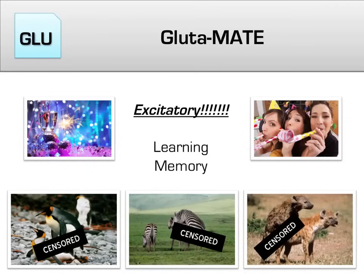When you hear glutamate, think excitatory — it is the exact opposite of GABA. There's not a lot of things more exciting than mating for most of the animal kingdom. Glutamate equals excitatory.